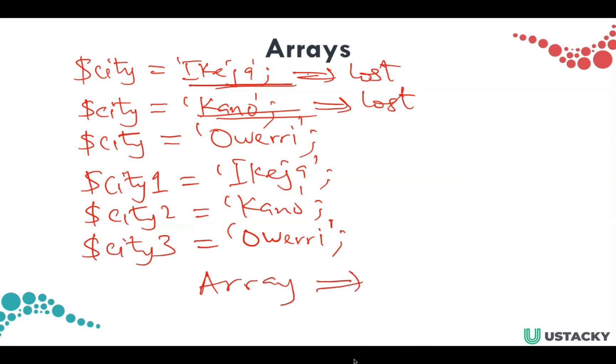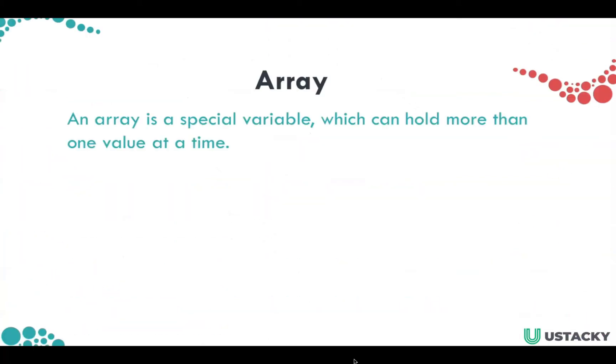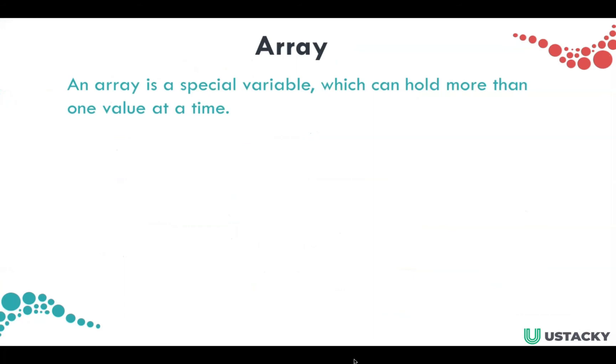An array is a special data type for storing lists of data. An array is a special variable which can hold more than one value at a time—basically, an array can hold a list of data.